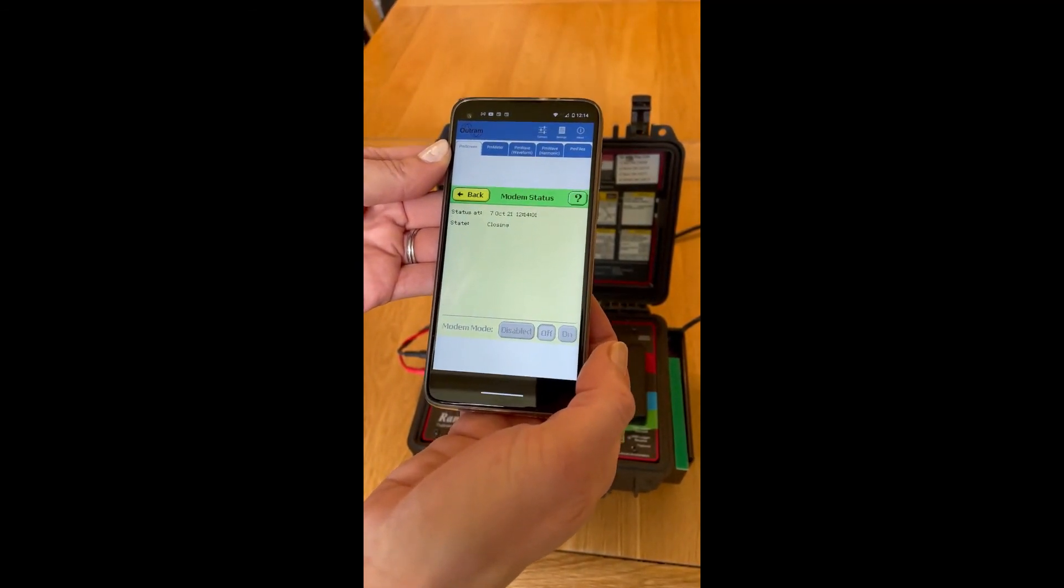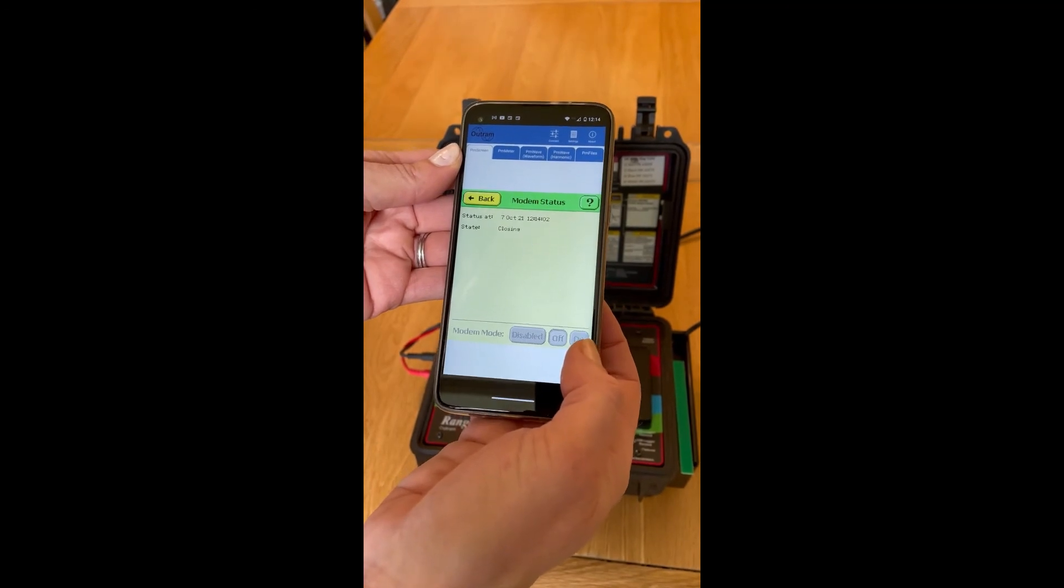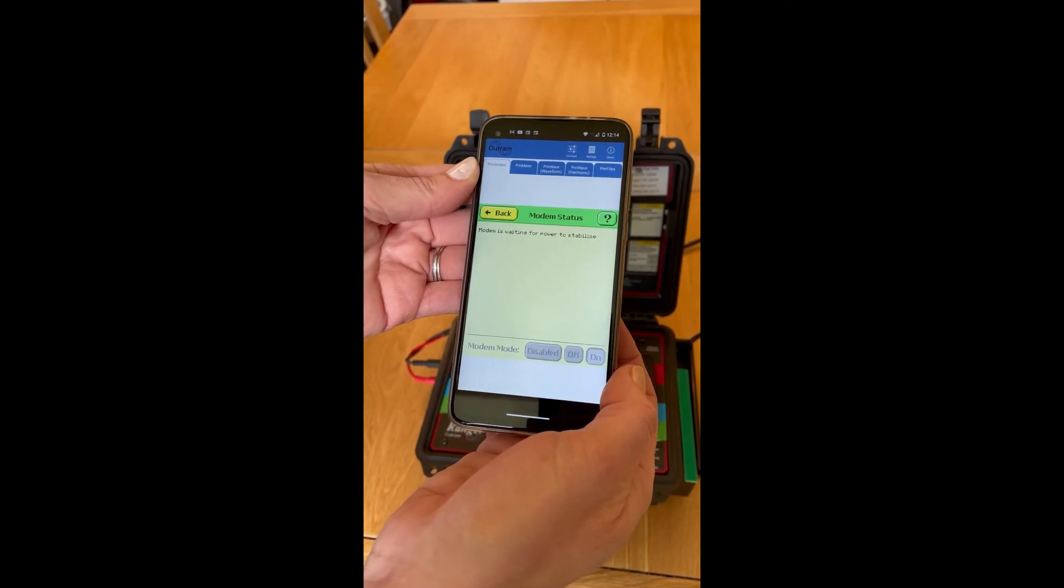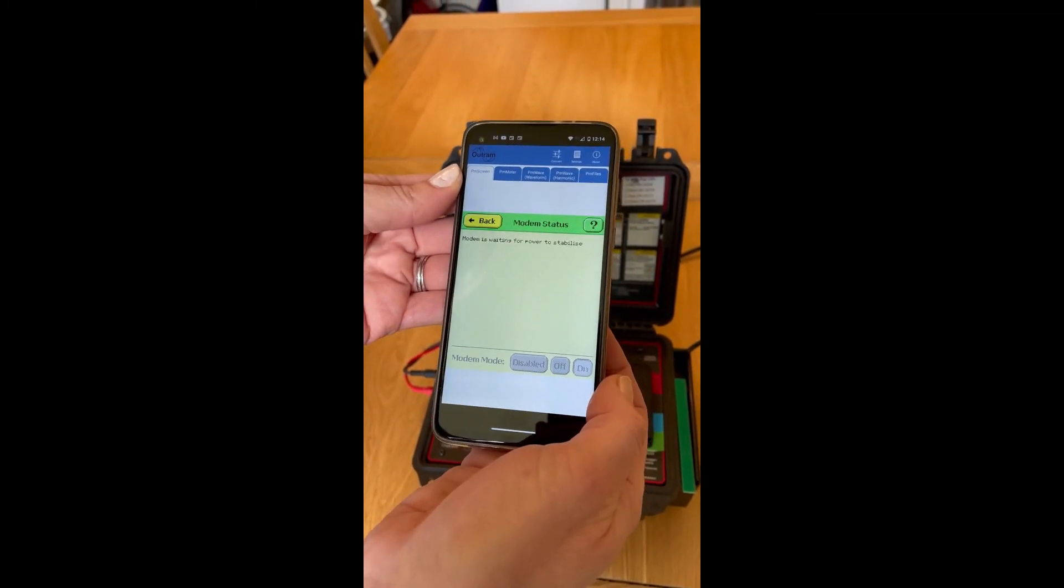Once it's closed down properly, you'll be allowed to turn it on again, where it'll register the SIM card and give you all the information you need.